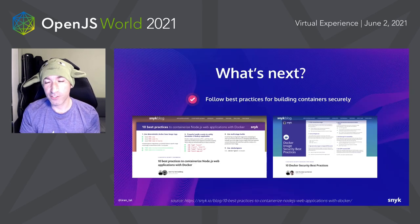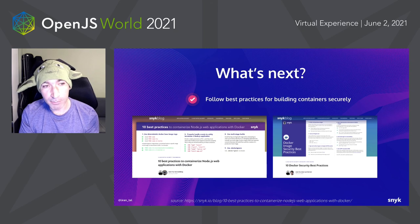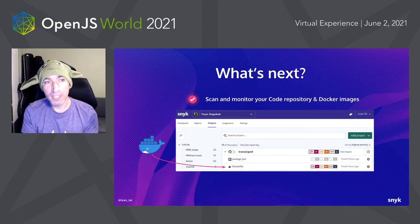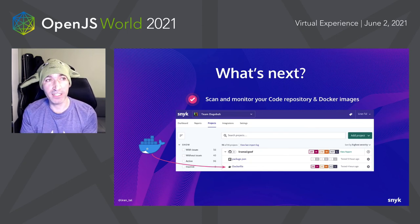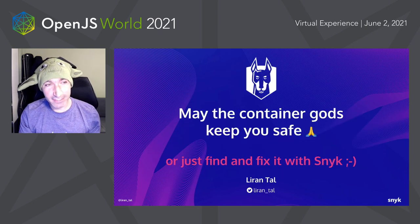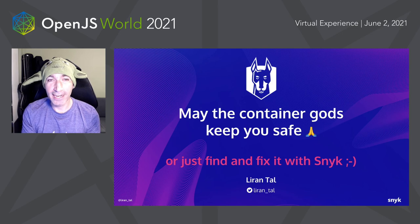There are many other best practices we haven't had time to cover for building containers securely. You can find a lot of them on the Snyk blog. You should scan and monitor your code repositories and Docker images all the time, because of all the vulnerabilities that can happen, as we've seen in this demo. May the container guides keep you safe — thank you for joining my talk, and good luck building your containers.